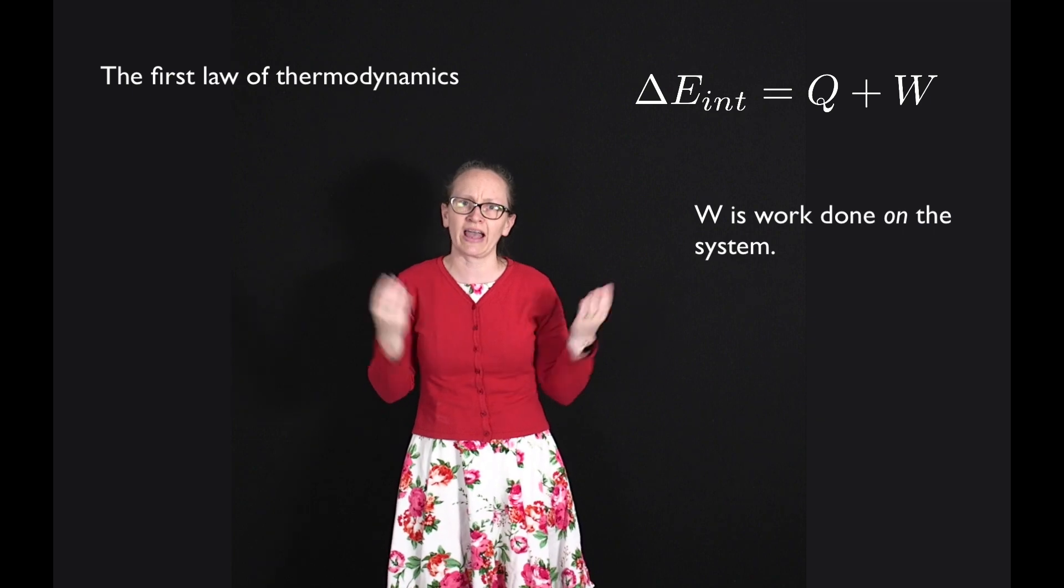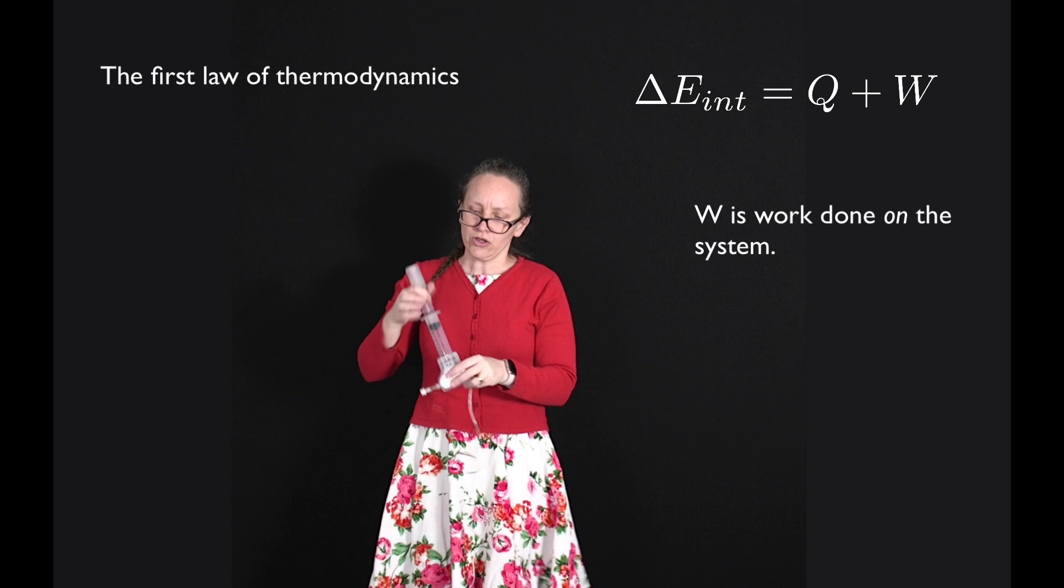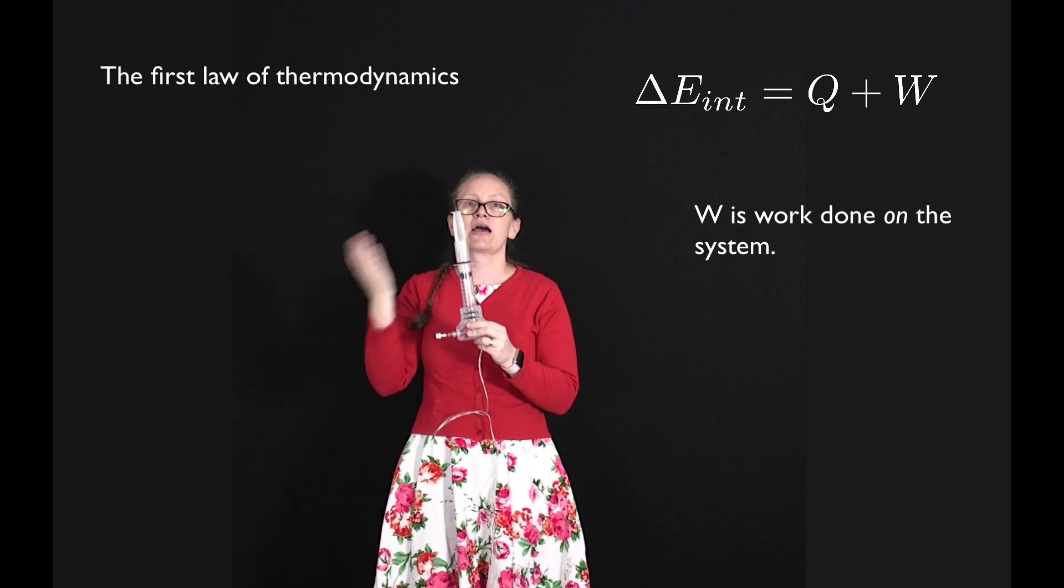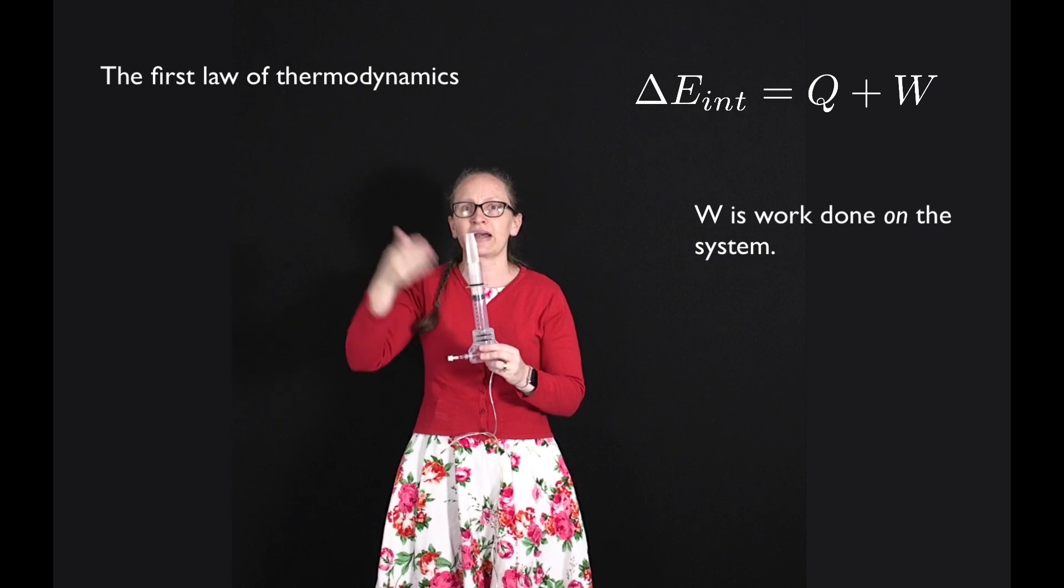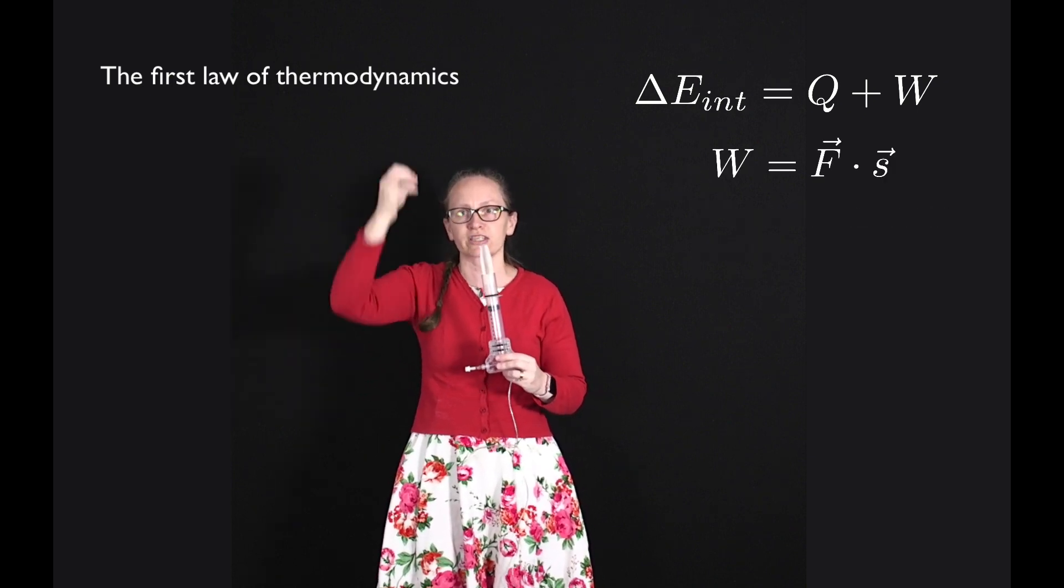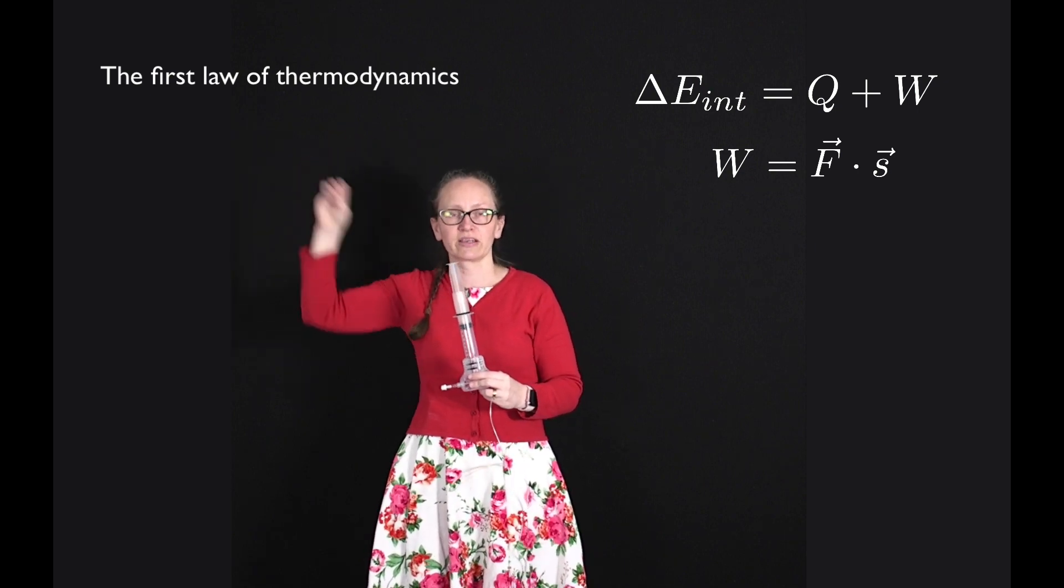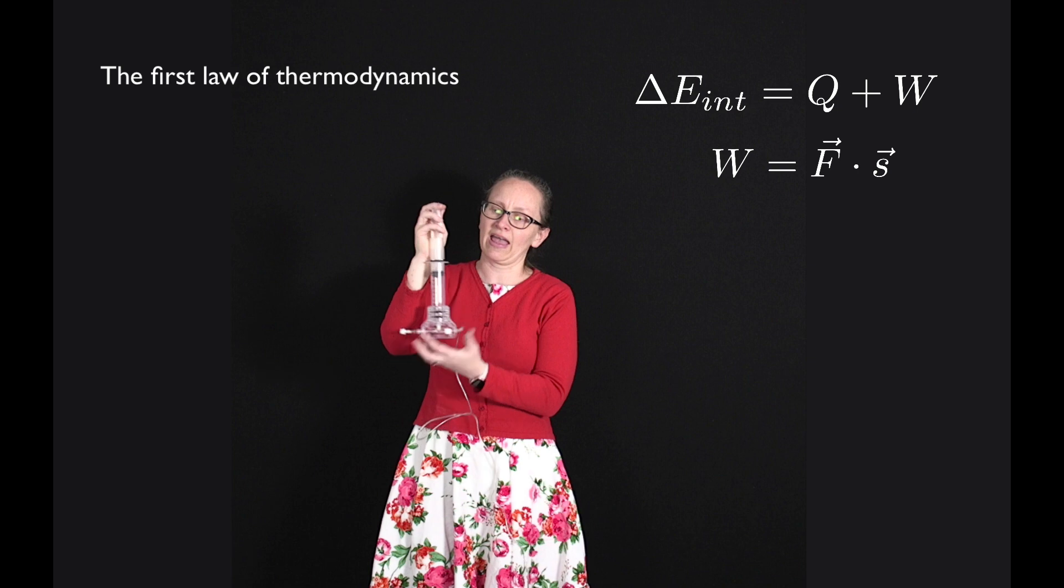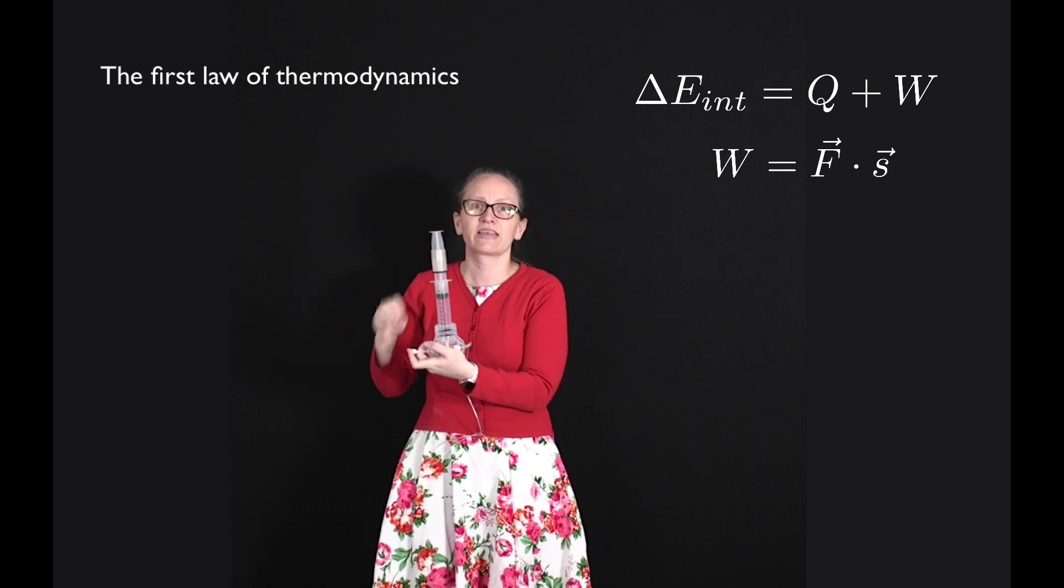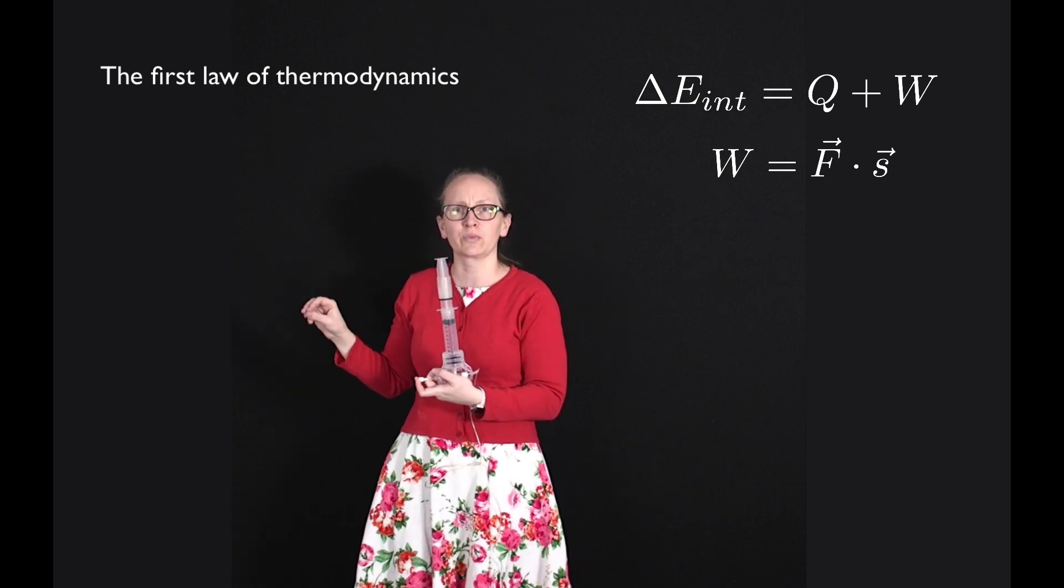So in order to work out how to calculate this let's consider a syringe. So here I have a syringe filled with gas. Now we know from mechanics that the amount of work done on a system is equal to the force times the displacement, and by times there I mean taking the dot product. So if I apply a force onto gas in a cylinder like this then I am doing work on the gas. So let's calculate how much work.